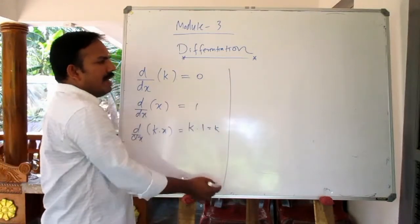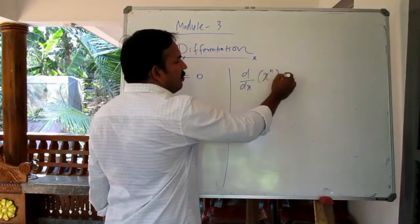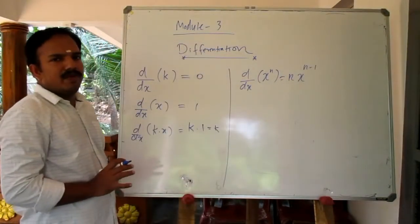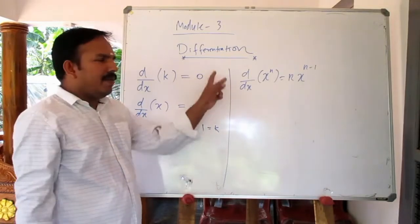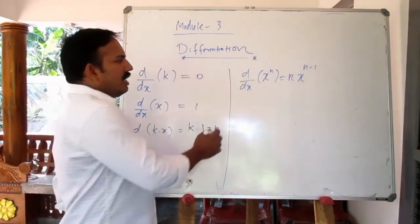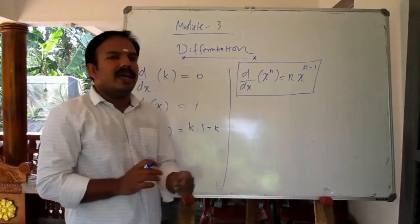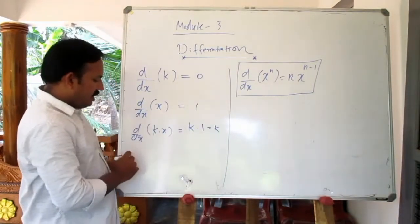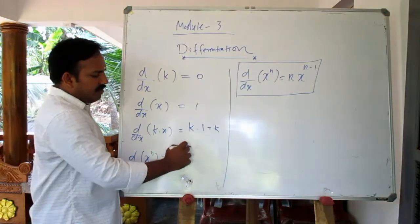Now the power rule: d by dx of x^n is equal to n into x^(n-1). This is the general power rule for differentiation.